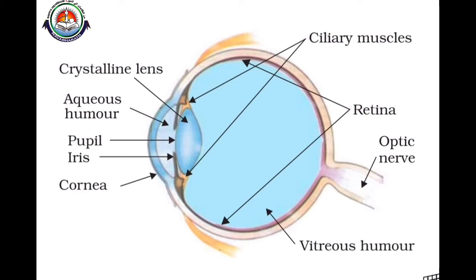The third part is the iris. The iris is a dark muscular diaphragm located just behind the cornea. It controls the size of the pupil.